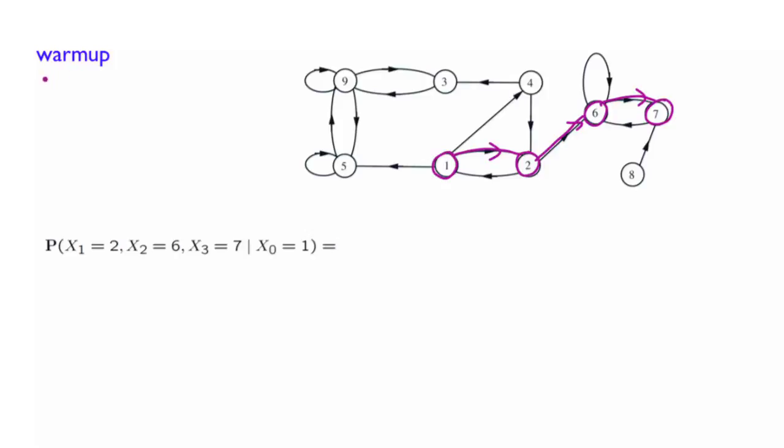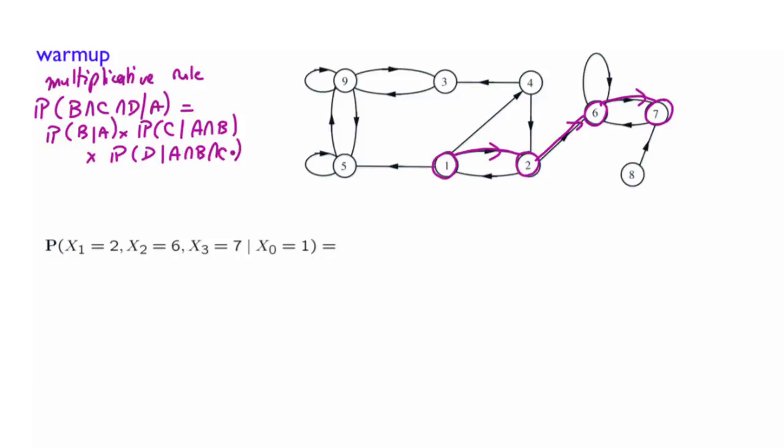Well, we can use a version of the multiplicative rule that we have introduced before. And so what is the specific format of that rule? You have three events like that, B, C, D, conditioned on A. This is the probability of B given A, times the probability of C given A intersection B, times the probability of D given A intersection B intersection C. So this is a version of the multiplicative rule, and this is what I'm going to use here.